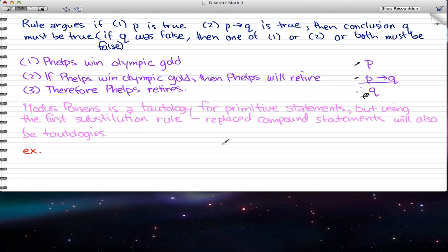Modus ponens is a tautology for primitive statements, but using the first substitution rule, we can replace them with compound statements and they will also be tautologies. What I mean is, say we have compound statements. Instead of P, we have R or S as our first statement. Our second statement is R or S implies negated T and U.